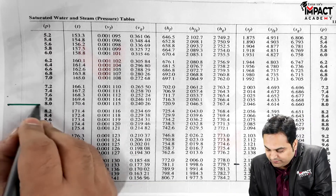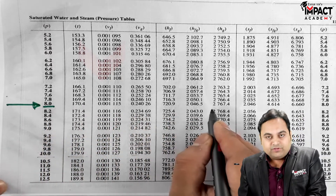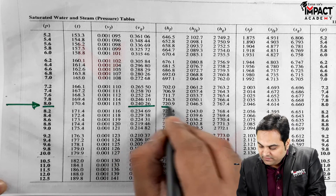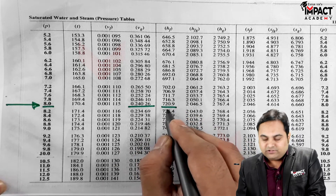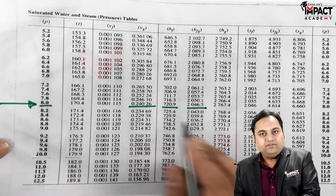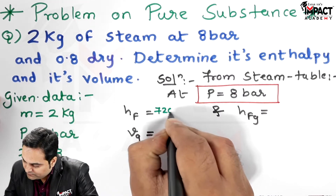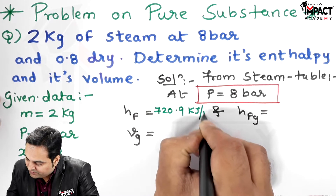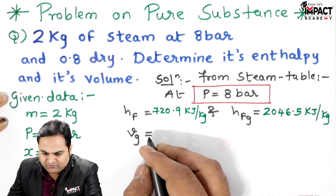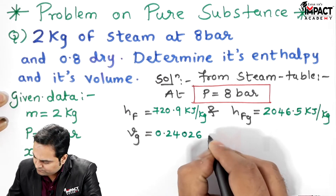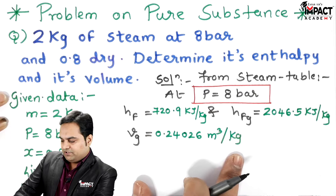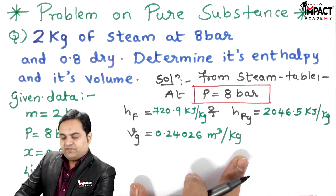From the steam table at 8 bar pressure, I take three values: VG — the specific volume of the dry vapor, HF — the enthalpy of the saturated liquid, and HFG — the latent enthalpy. The values are: HF = 720.9 kJ/kg, HFG = 2046.5 kJ/kg, and VG = 0.24026 m³/kg. Note that the steam table gives specific properties per kilogram.